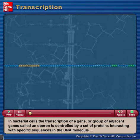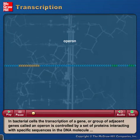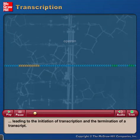In bacterial cells, the transcription of a gene or group of adjacent genes called an operon is controlled by a set of proteins interacting with specific sequences in the DNA molecule, leading to the initiation of transcription and the termination of a transcript.